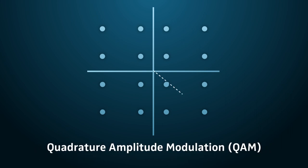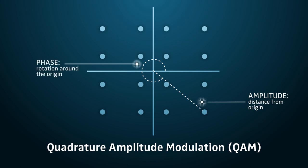Each of the 16 dots has a distinctive combination of amplitude, or distance from the origin, and phase, or rotation around the origin. This modulation scheme uses four bits per modulation symbol.